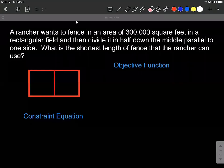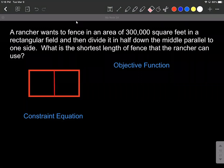All right, let's give this optimization problem a go. We have a rancher who wants to fence in an area of 300,000 square feet in a rectangular field and then divide it in half down the middle, parallel to one side. What's the shortest length of fence that the rancher can use?